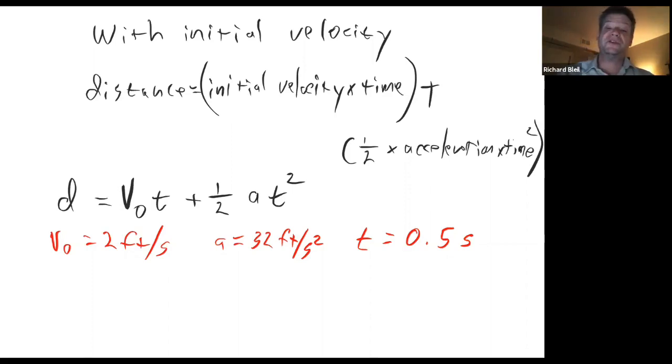Then we combine the two previous equations. Velocity times time gives us a distance. One-half times acceleration times time squared gives us distance.